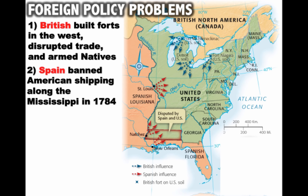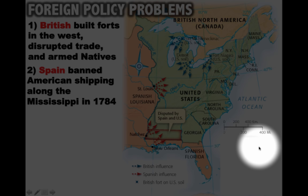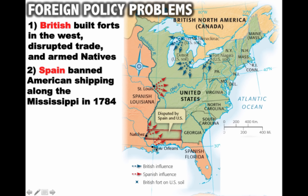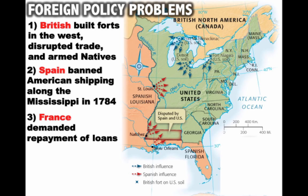Another problem came from Spain: in 1784 they banned American shipping along the Mississippi River, basically shutting off the port of New Orleans. This was a huge problem because the Mississippi was essentially the highway that trade traveled on. Looking at the map, roughly half of the territory of the United States was not firmly in their control.